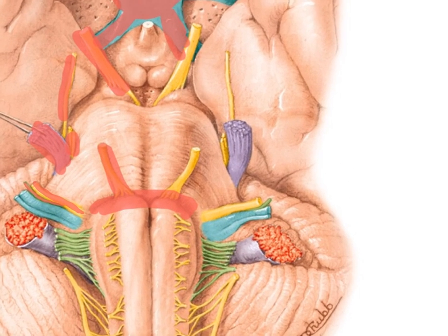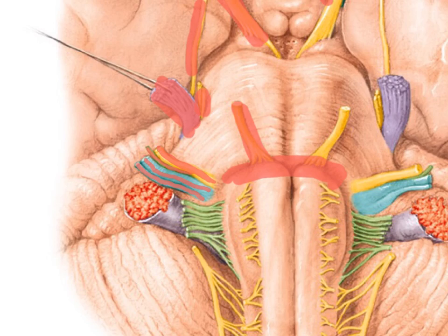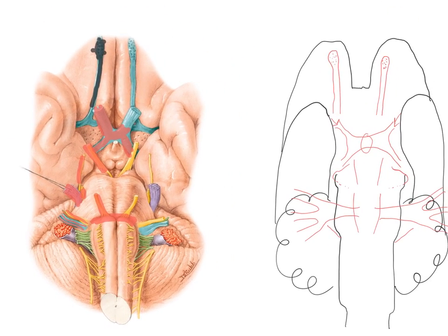The eighth cranial nerve, the vestibulocochlear nerve, also has two separate components. We can predict their names from the nerve's name: a vestibular component carrying information concerning balance and posture, and a cochlear component carrying auditory information. An everyday analogy is a headphones cable where two thin cables are welded together but can be peeled apart — that's a bit like how these nerves are arranged. The vestibulocochlear nerve emerges very close to the facial nerve and is now added to our cartoon.